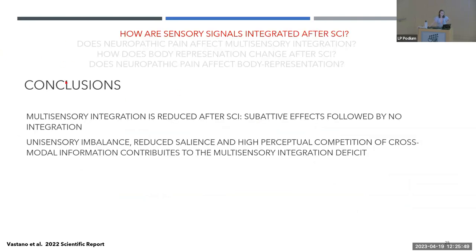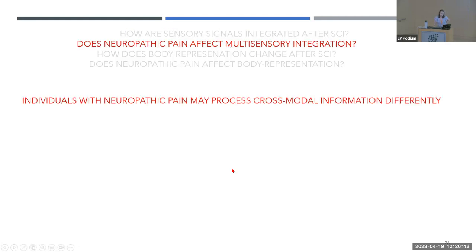The conclusion of this first study is that multi-sensory integration was reduced after spinal cord injury, with evidence of sub-additive effects followed by no integration. Using a computational model, we found that the difference between controls and SCI in multi-sensory integration was related to reduced salience of the stimulus when bimodal, followed by higher perceptual competition. These two deficits — reduced salience and competition — contributed to the impaired multi-sensory integration effect.